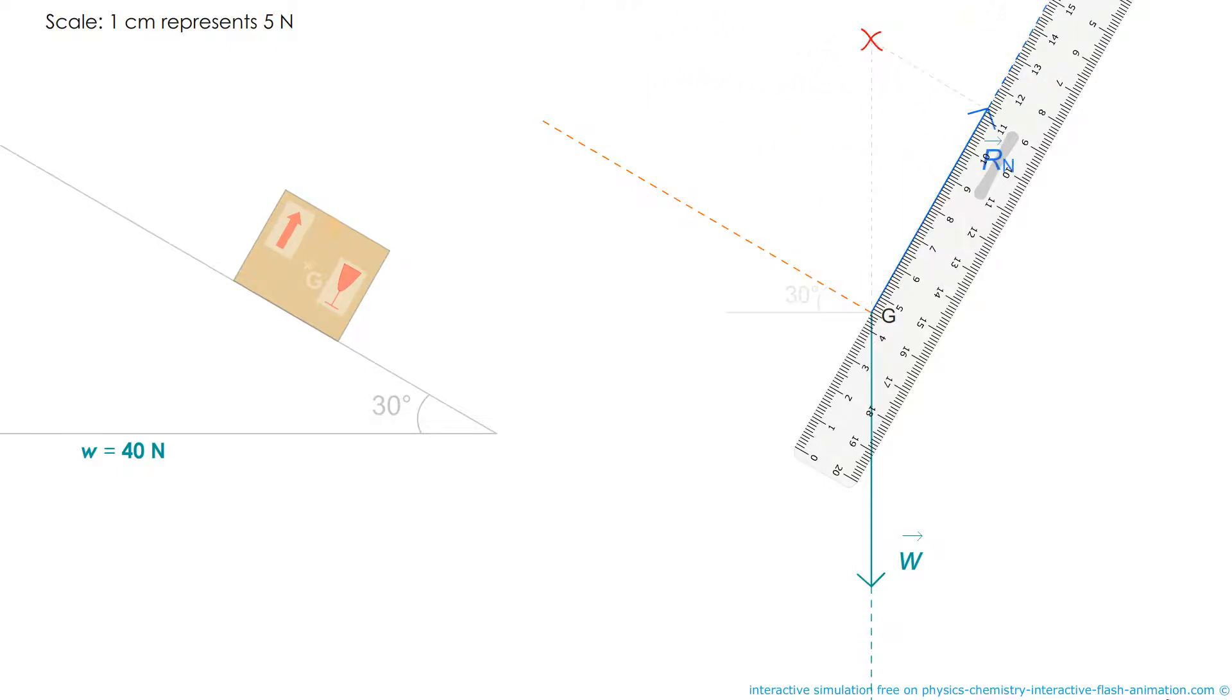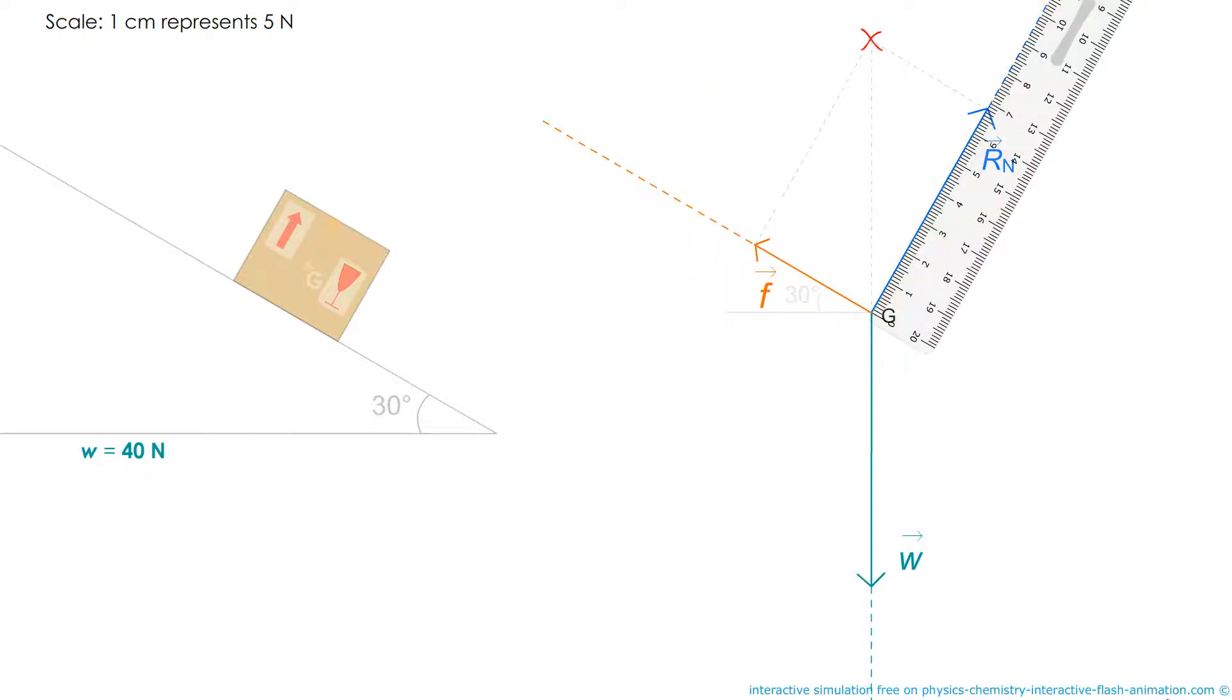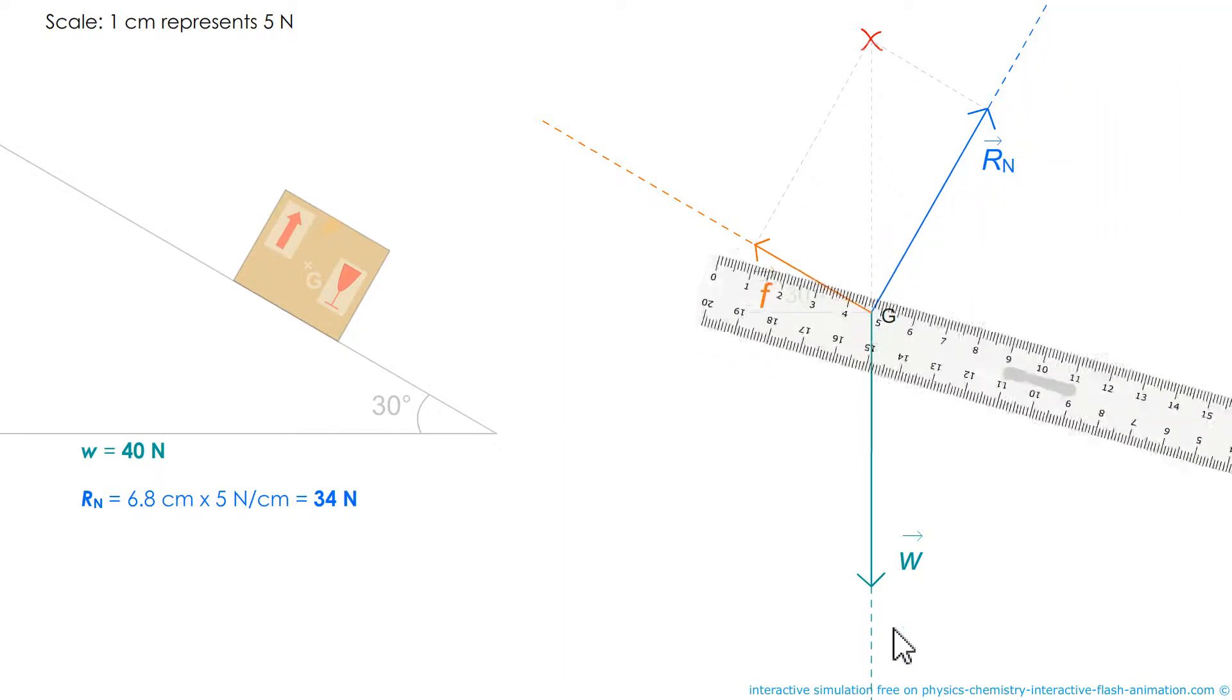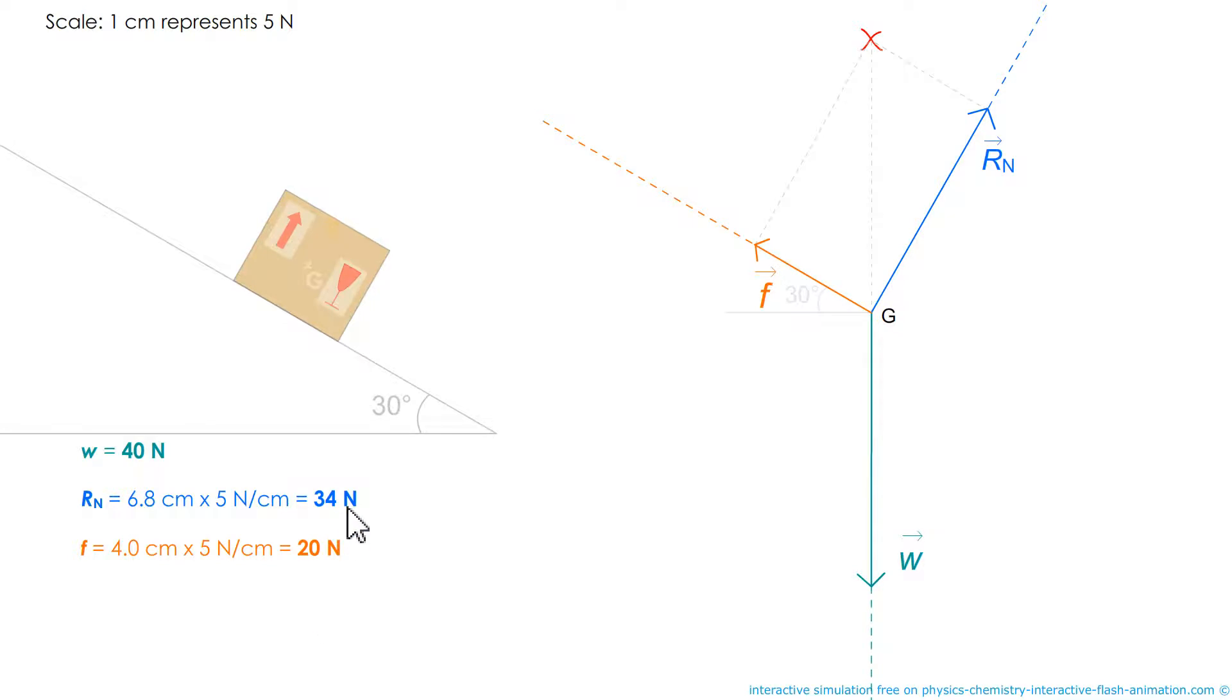Except that the force that is known here is weight. With this scale 40 newtons are represented by 8 centimeters. I mark its opposite. And I am going to look for the other two forces by drawing parallels. Rn here. And the friction force there. To obtain once measured, 6.8 centimeters to say that it is 34 newtons. 20 newtons for the friction force. Another technique.